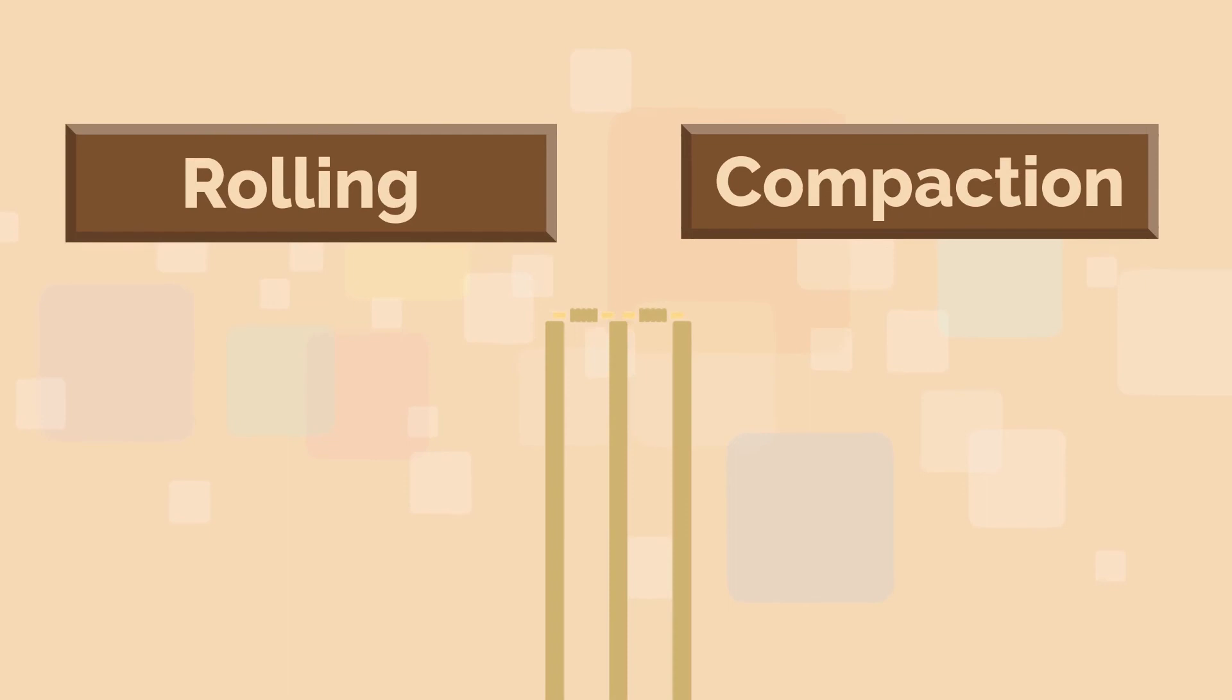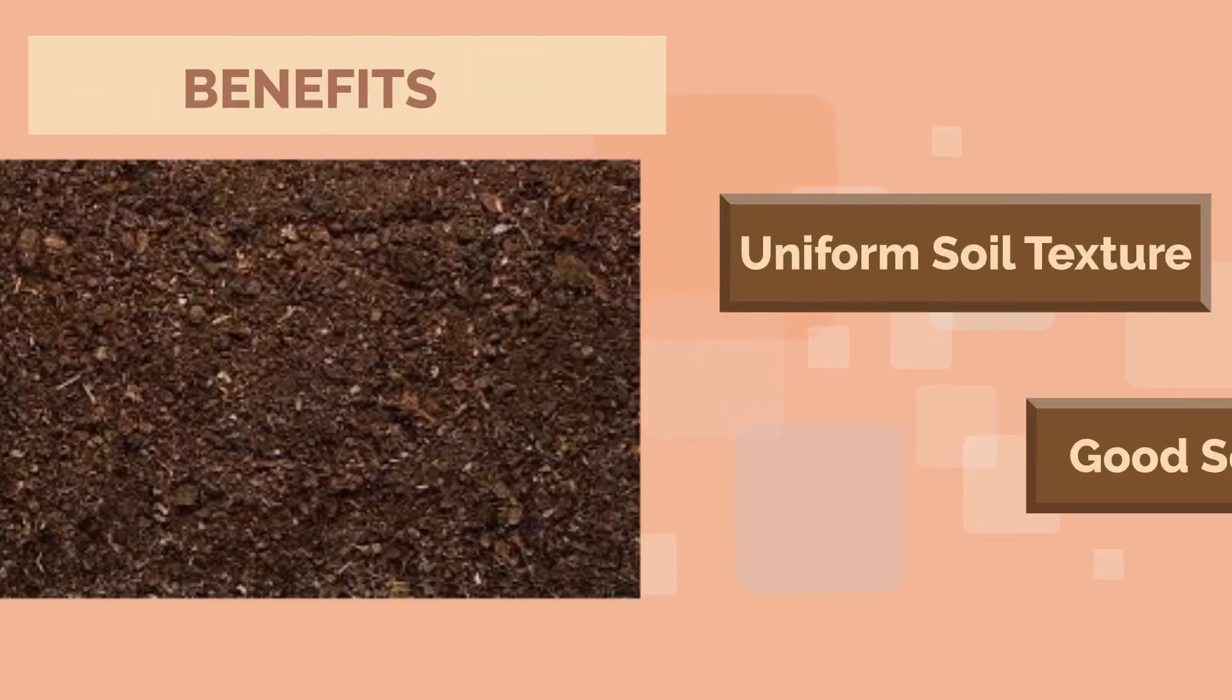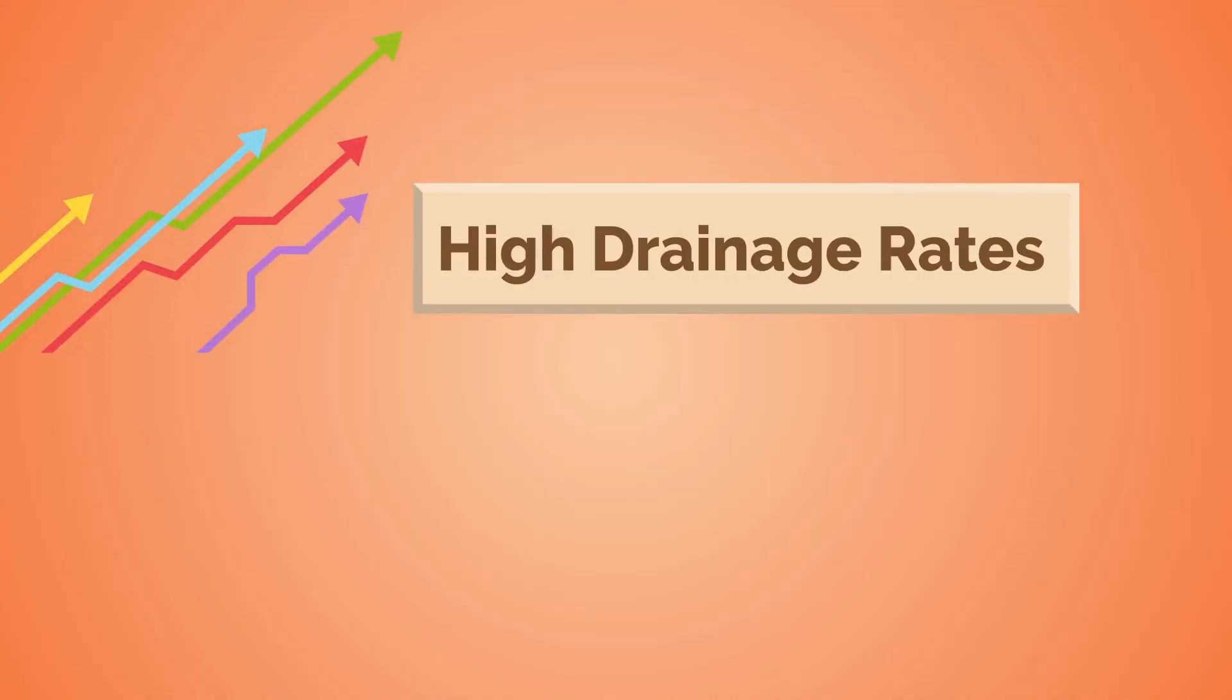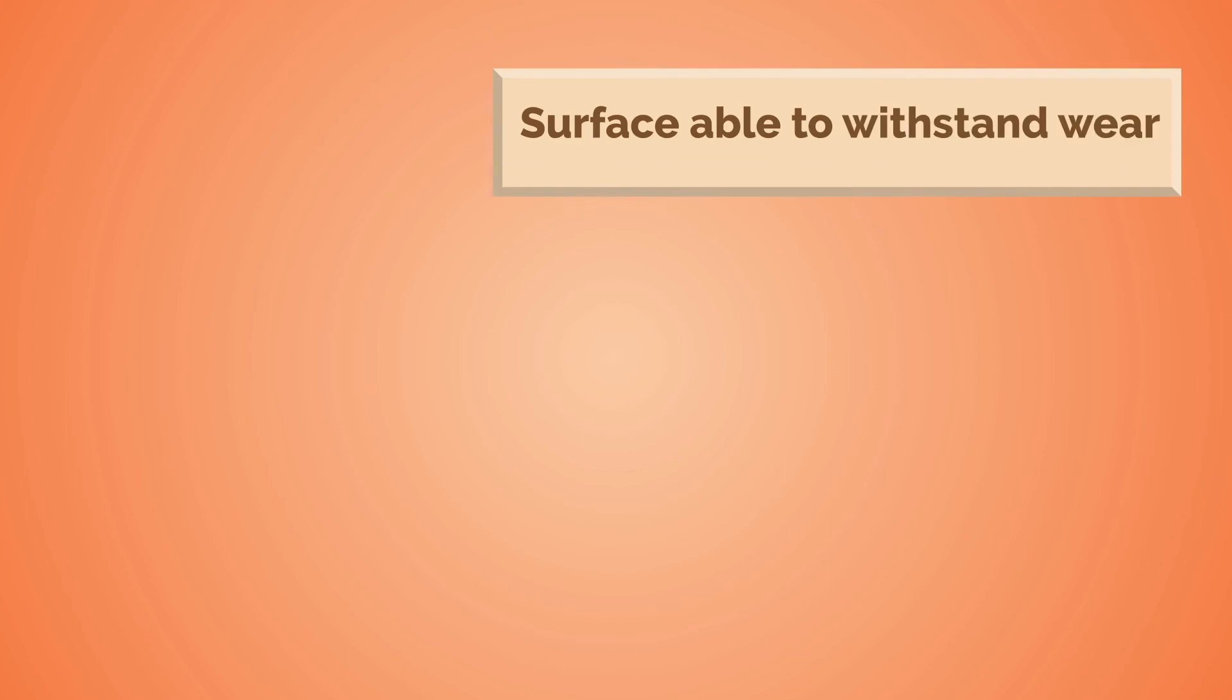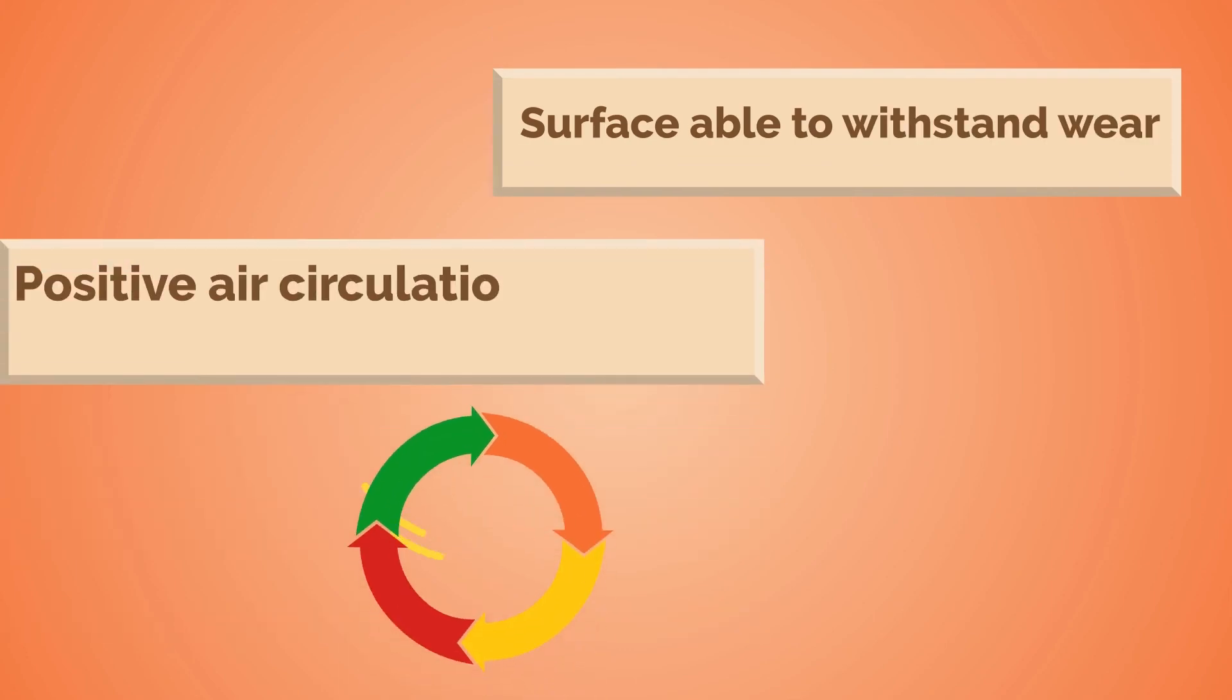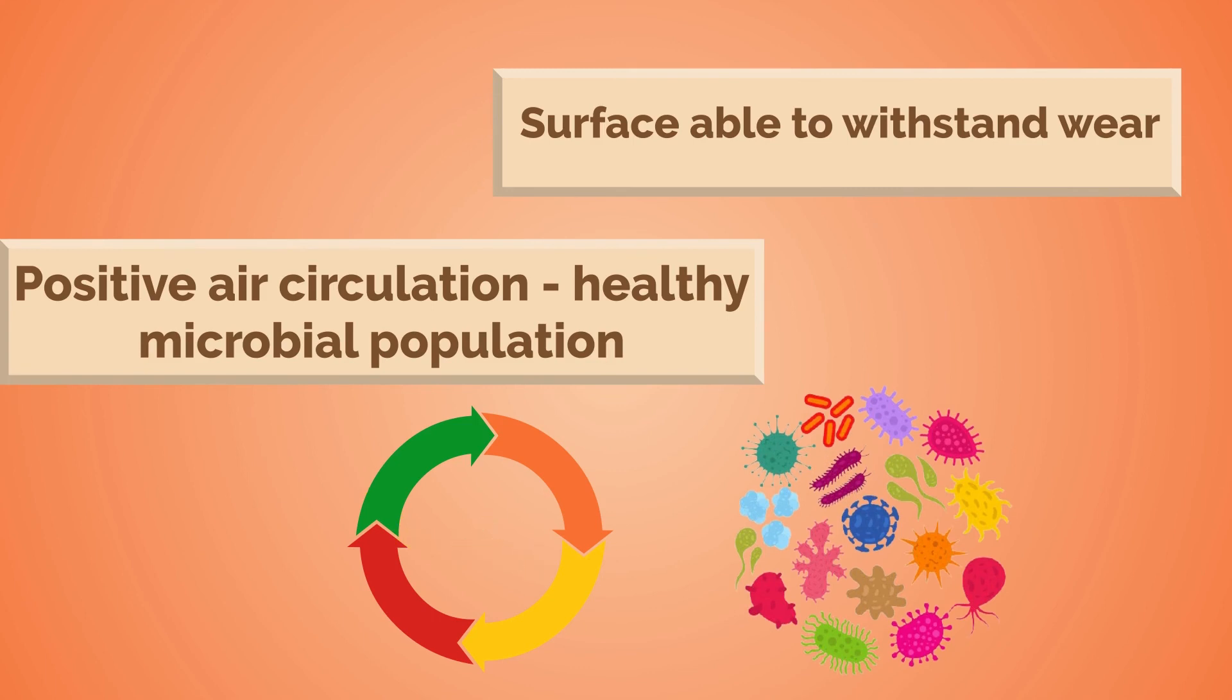Some of the benefits of having a uniform soil texture and a good soil structure are: high drainage rates, increased root development, a surface that is able to withstand wear, positive air circulation, and a healthy microbial population. This reduces disease and produces a drier surface.